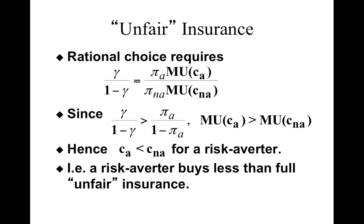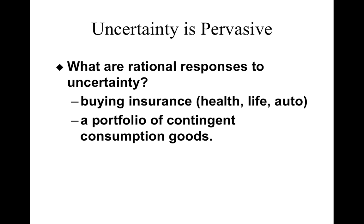So you can see how the choice of consumption smoothing depends on the price the consumer faces for insuring against shocks to consumption, and that depends on whether the insurance industry is competitive or not. Uncertainty is pervasive — not only about accidents, but also health, life, and so on. The rational responses to uncertainty include: first, buying insurance as we just discussed, and second, buying a portfolio of contingent consumption goods.